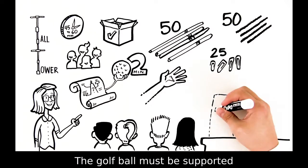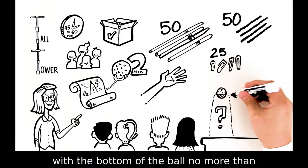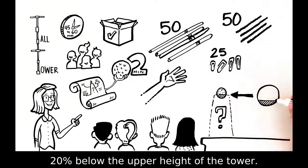The golf ball must be supported near the top of the tower, with the bottom of the ball no more than 20% below the upper height of the tower.